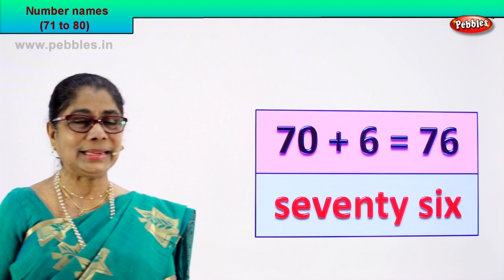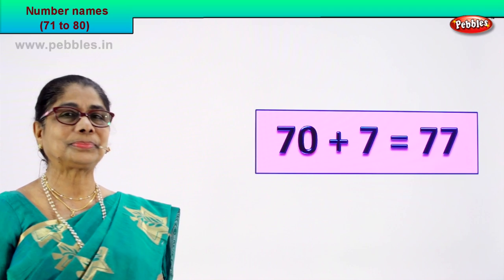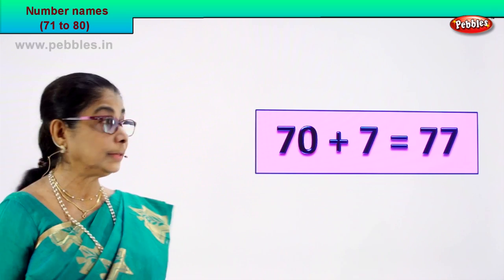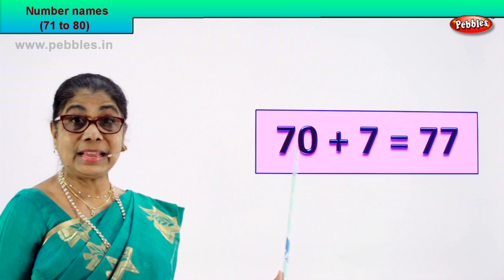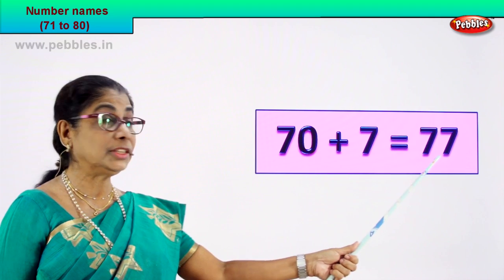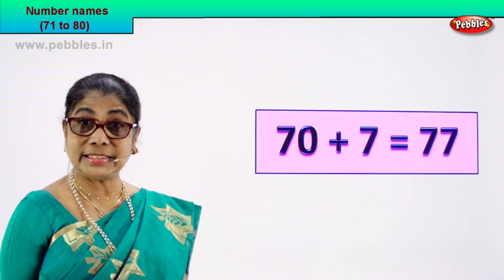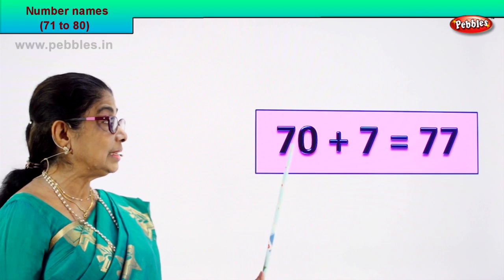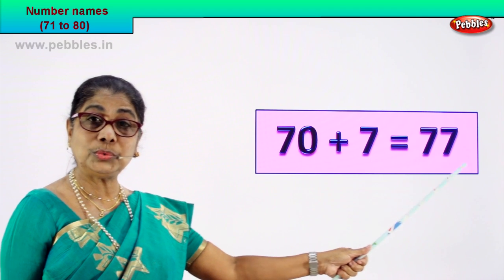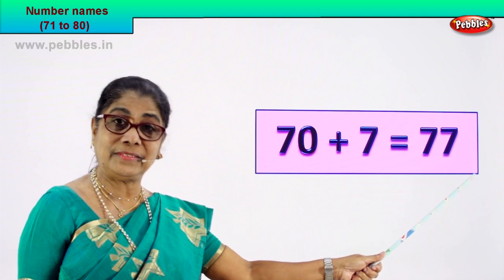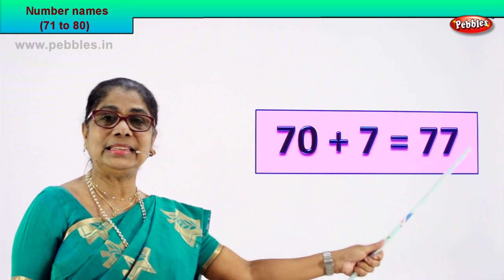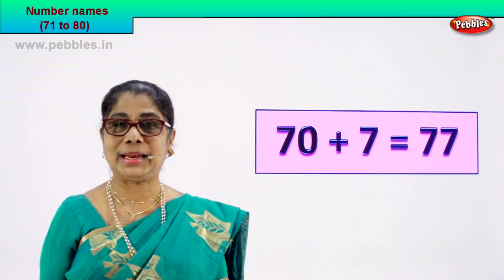Shall we go to our next number? How do we get the next number? 70 plus 7 is equal to 77. 70 plus 7 is equal to 77. 7 and 7 — 77. That's the numeral.